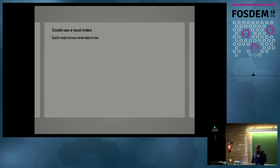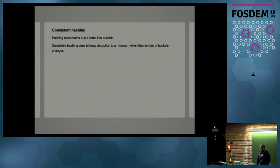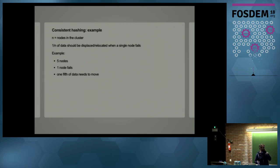So Dynamo, Cassandra, and Riak, they all use this idea of consistent hashing to determine where data should go. So I started looking at that. And so I was looking at data placement and how we place data on the different servers. So consistent hashing is essentially a way of placing items into buckets. And hashing is just a way of using maths to put items into buckets. And consistent hashing aims to keep the disruption to a minimum when the number of buckets changes. And so in our system, that translates to when the number of nodes in the cluster changes. Then we want to keep the disruption to a minimum. And we want the amount of data that is displaced to another server to stay to a minimum as well. So in this example, if we have five nodes in a cluster and one node fails, only a fifth of the data should have to move to another node, assuming that we're not able to replace that node immediately.